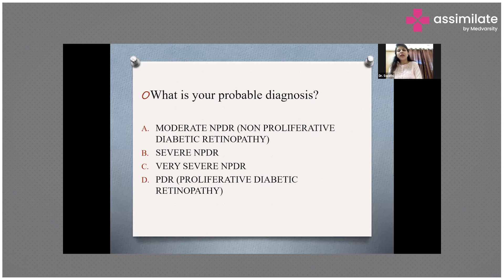In moderate NPDR, micro aneurysms are present in at least one quadrant of the eye — the four quadrants being superior, inferior, medial, and lateral. Soft exudates called cotton wool spots are also present. The key differentiating feature of moderate NPDR compared to mild NPDR is the presence of characteristic venous beading.